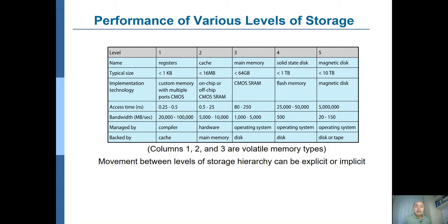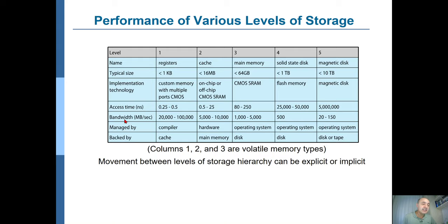We discussed earlier the levels of storage — from registers at the top to magnetic tapes at the bottom. Looking at the top five: registers, cache, main memory, solid-state disk, and magnetic disk. These are listed with their typical sizes, the technology used, and access time. Bandwidth is how much data can be transferred per unit of time, for example per second.